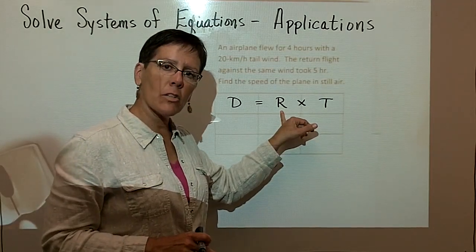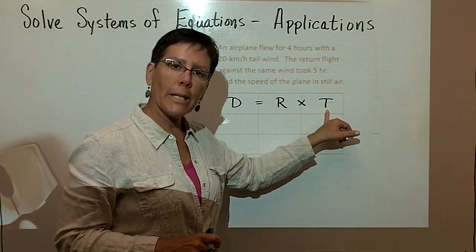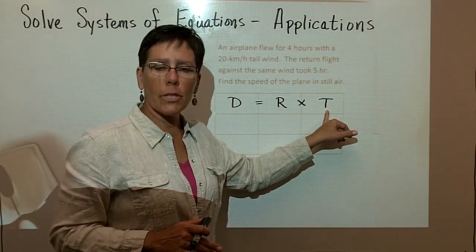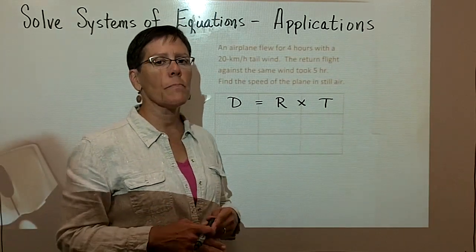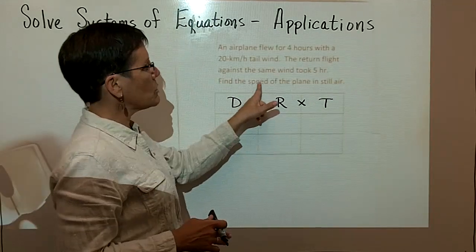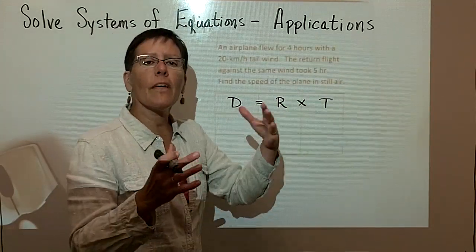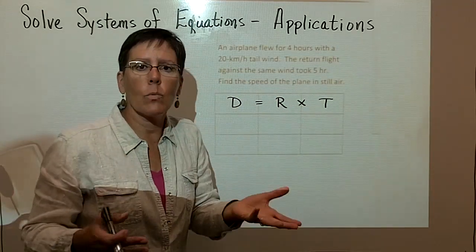If you travel at 70 miles per hour for 3 hours, then you're going to go 210 miles. That will be the distance that you accomplish. So I want to find the speed of the plane in still air without it being affected by the wind.